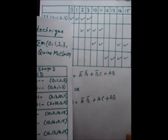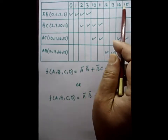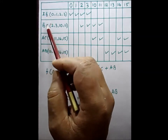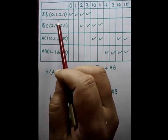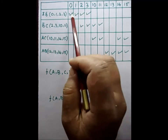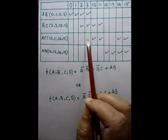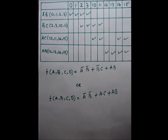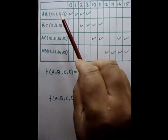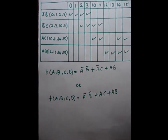We now prepare a prime implicant table. The minterms are written across the top, and the prime implicants are listed with the minterm numbers they cover (the numbers written in their brackets). We tick-mark the corresponding minterms: for ā·b̄ we tick 0,1,2,3; for b̄·c we tick 2,3,10,11; and for AC we tick the minterms it covers.